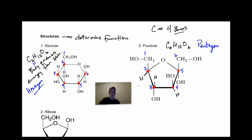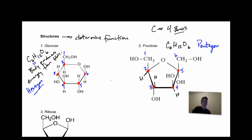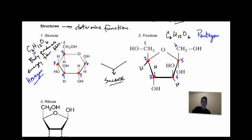Because this structure is different — it's still a ring but different from glucose — these two have different functions. When glucose and fructose bond with each other to make a polymer, that bond they make is called sucrose. We're not looking at that today; that's going to be in the next podcast. Fructose and glucose will make a polymer with one another to form sucrose.